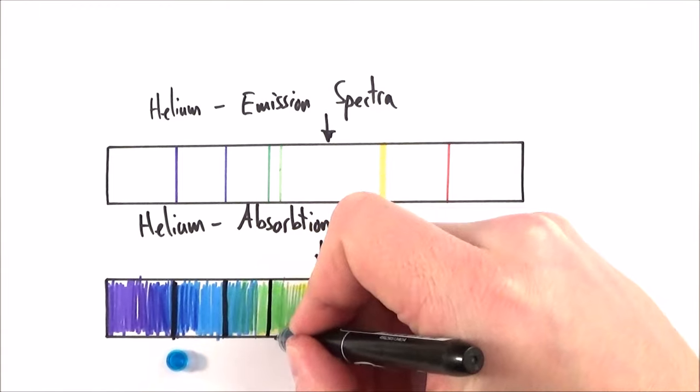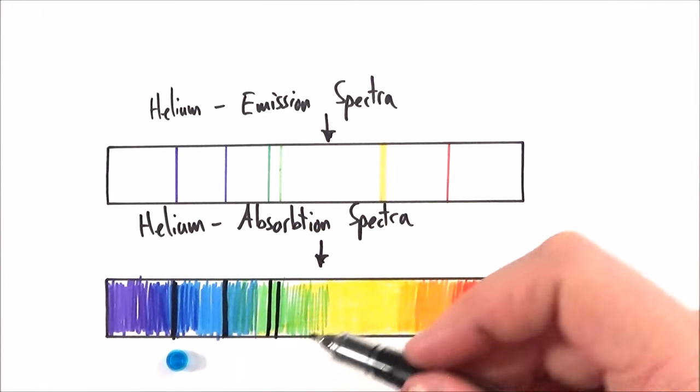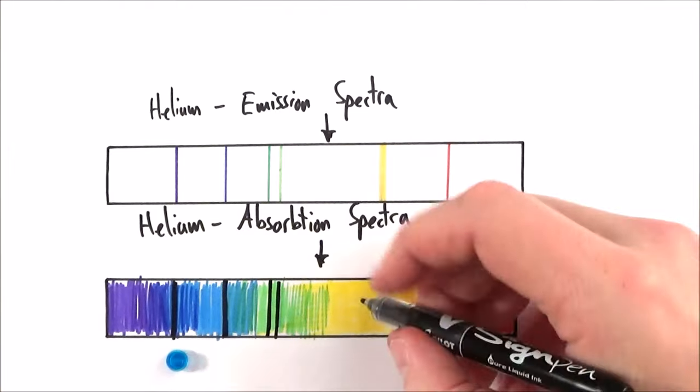We see a black line where no light gets through. Certain frequencies of green light are absorbed and therefore there's a gap in the spectra.